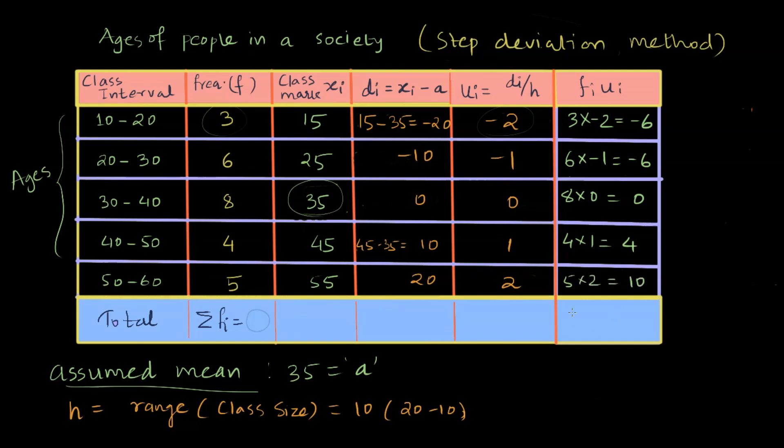Now I should be summing up all the fiui. So what is the summation fiui? Summing up all these multiplications: minus 6 minus 6, which is minus 12, then plus 14, that gives me 2. And what is the total frequency? Total frequency is 9 plus 8, 17 plus 9, that is 26.